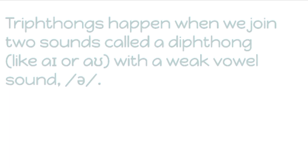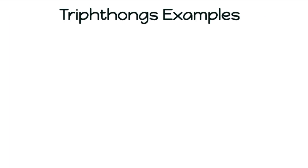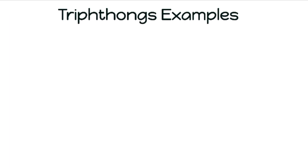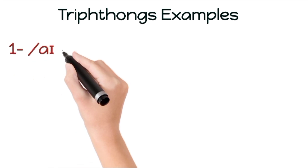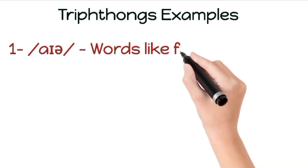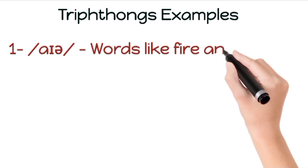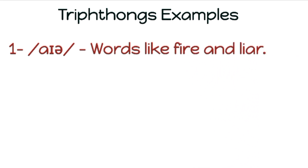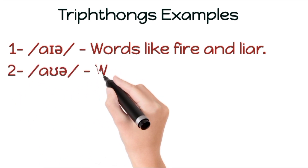There are only five Triphthongs in English, and we will see which Triphthongs are there in British accent along with examples. The first sound is 'Aya'. These three sounds are combined together to form this Triphthong. For example: fire, lyre.